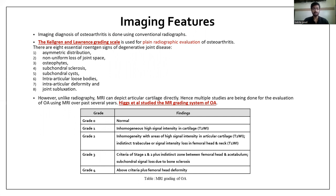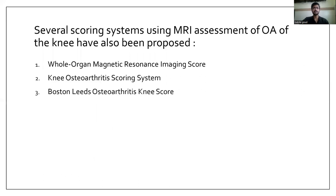Grade four includes the above criteria up to grade three plus femoral head deformity. There are also several scoring systems using MR assessment of osteoarthritis of the knee, such as whole organ magnetic resonance imaging score, knee osteoarthritis scoring system, and Boston Leeds osteoarthritis knee score.